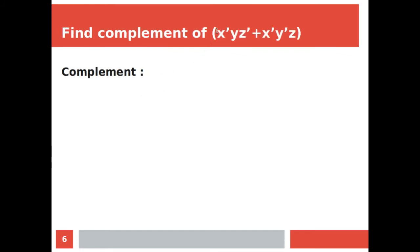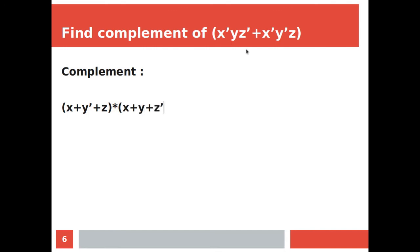Let's find the complement of this boolean function. X complement converts to X, product converts to plus, Y converts to Y complement, plus Z complement converts to Z, then plus converts to star, then X complement converts to X, Y complement converts to Y, and Z converts to Z complement.